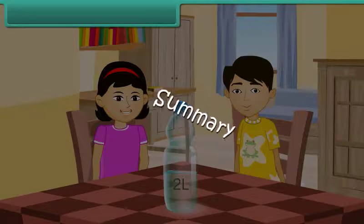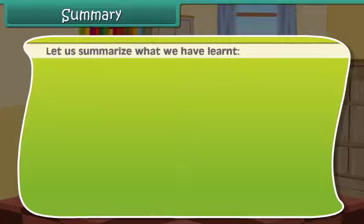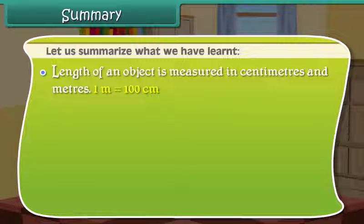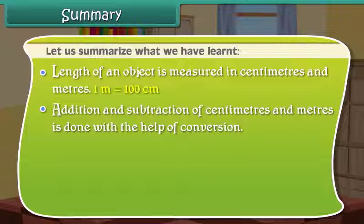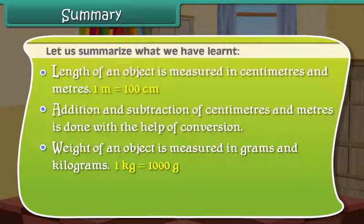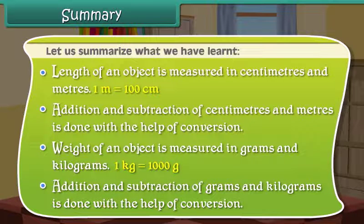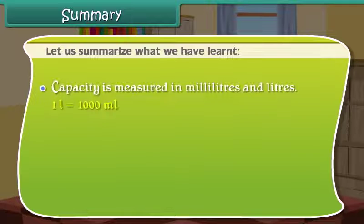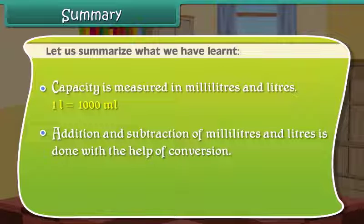Summary: Length of an object is measured in centimeters and meters — 1 meter equals 100 centimeters. Addition and subtraction of centimeters and meters is done with the help of conversion. Weight is measured in grams and kilograms — 1 kg equals 1000 grams. Capacity is measured in milliliters and liters. Addition and subtraction of all these units is done with the help of conversion.